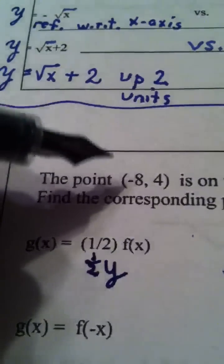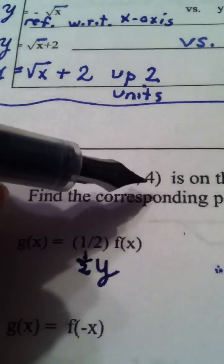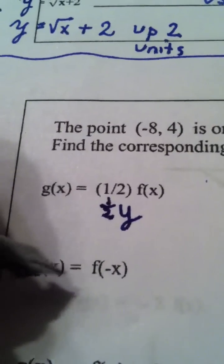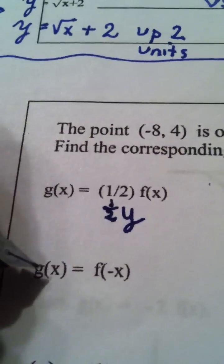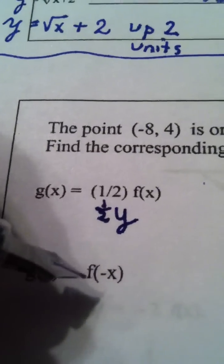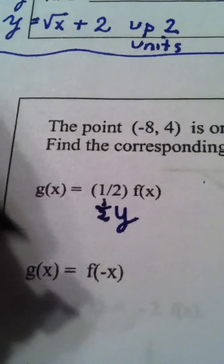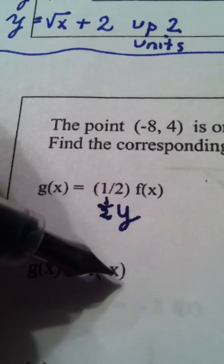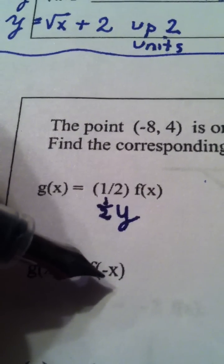So basically, you know the point you're starting with is (-8, 4). And they're telling you what they want you to do to come up with a point on g. Well, here, look what we did. We took the original x value and we took the opposite of it.